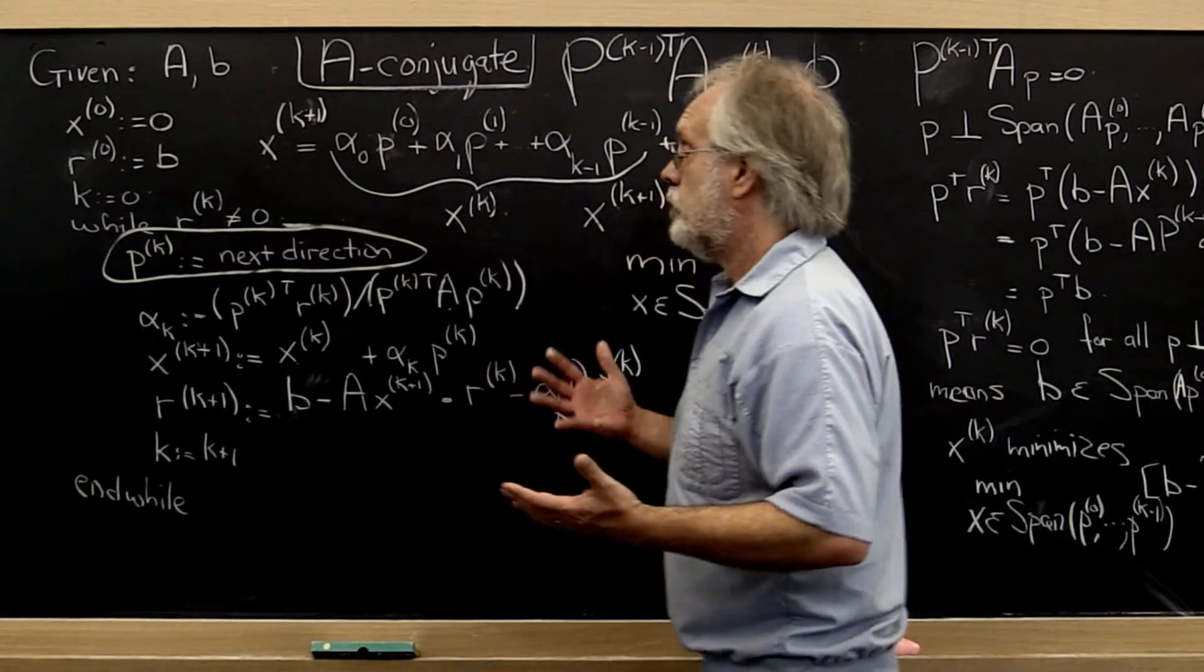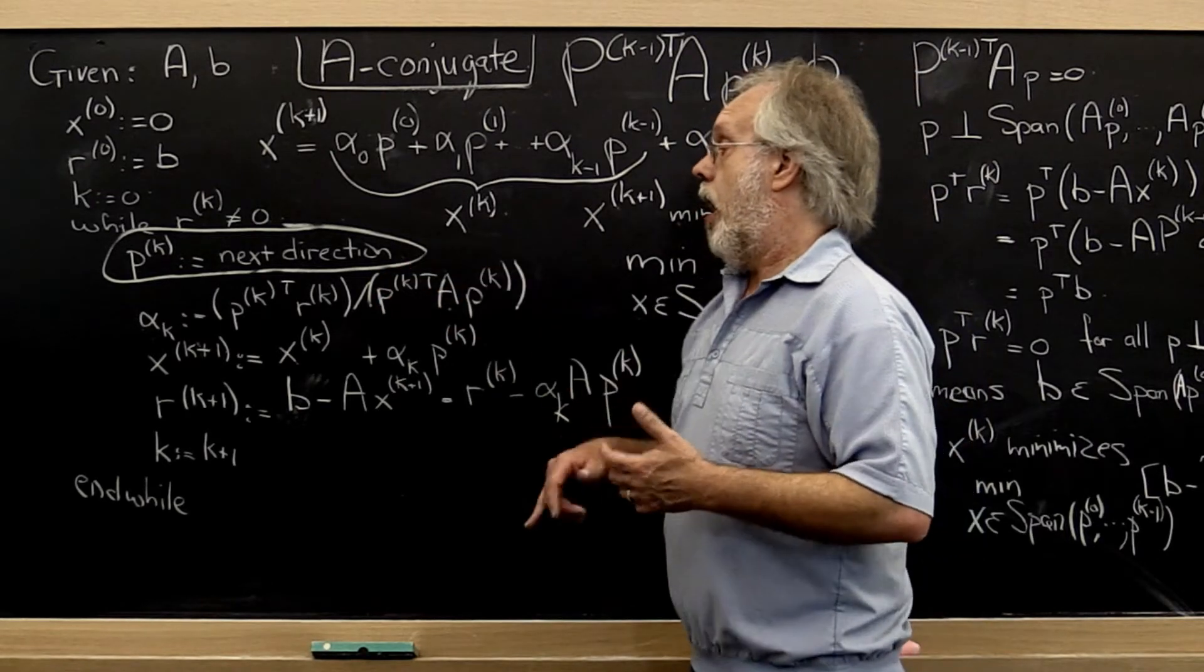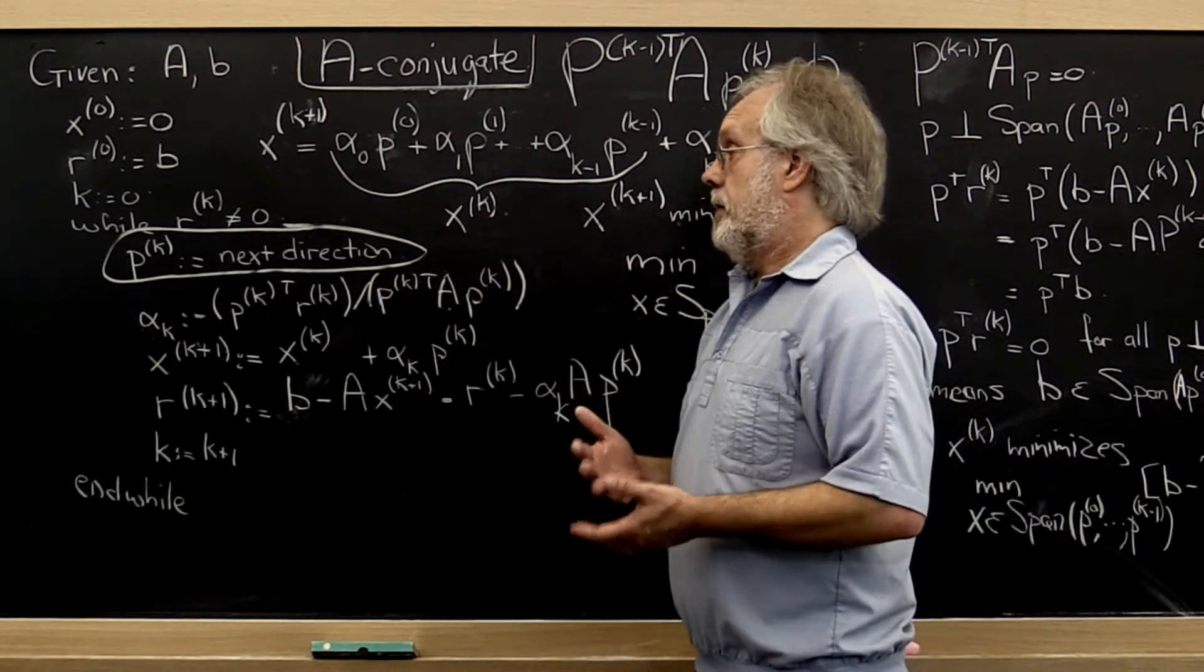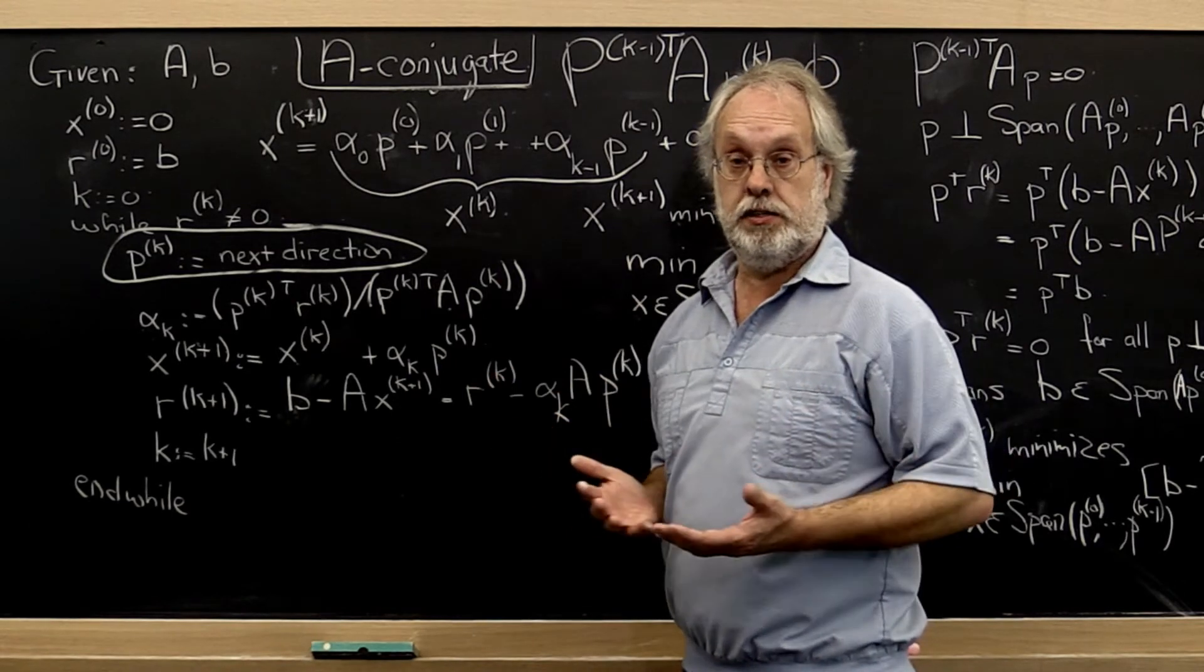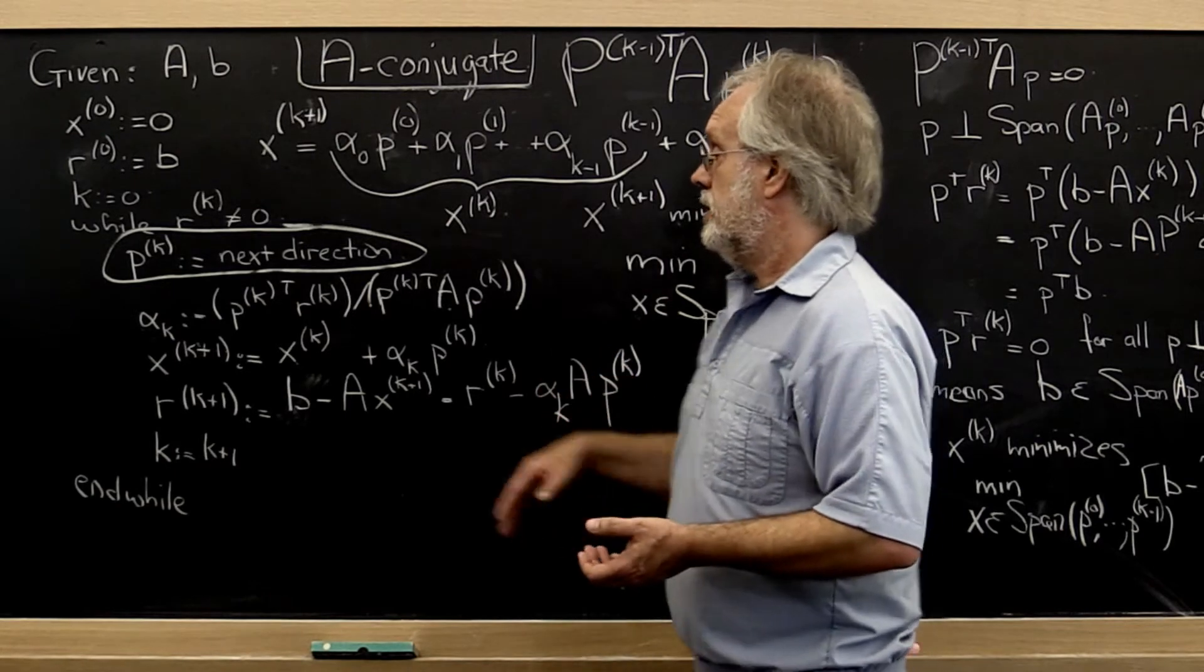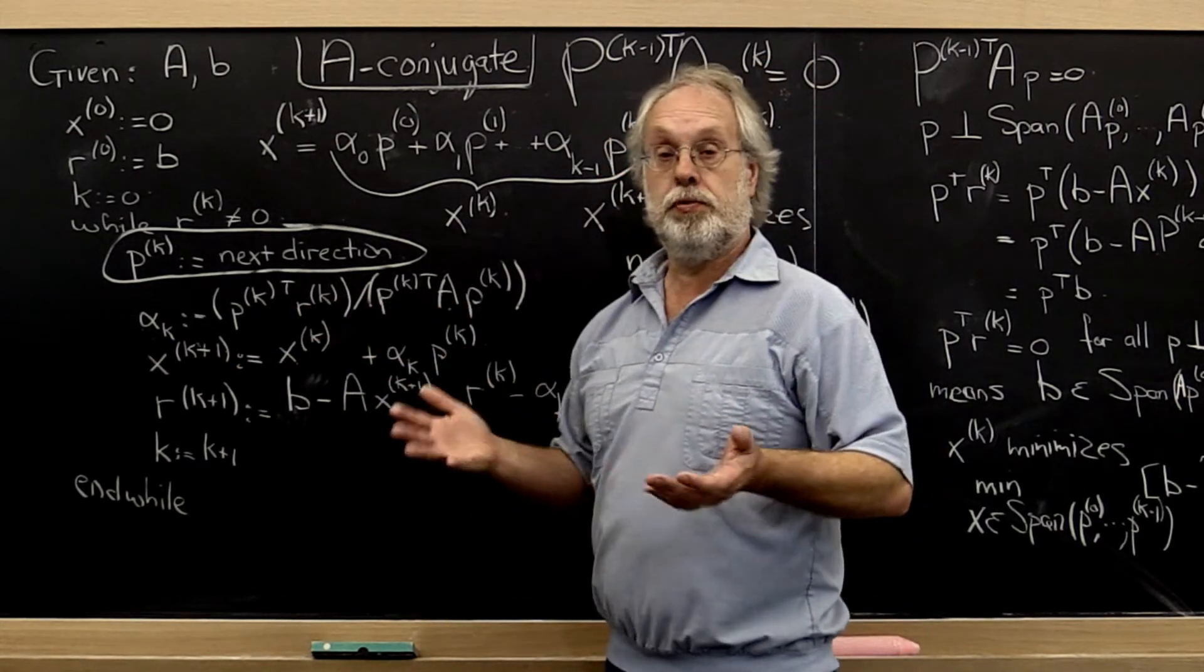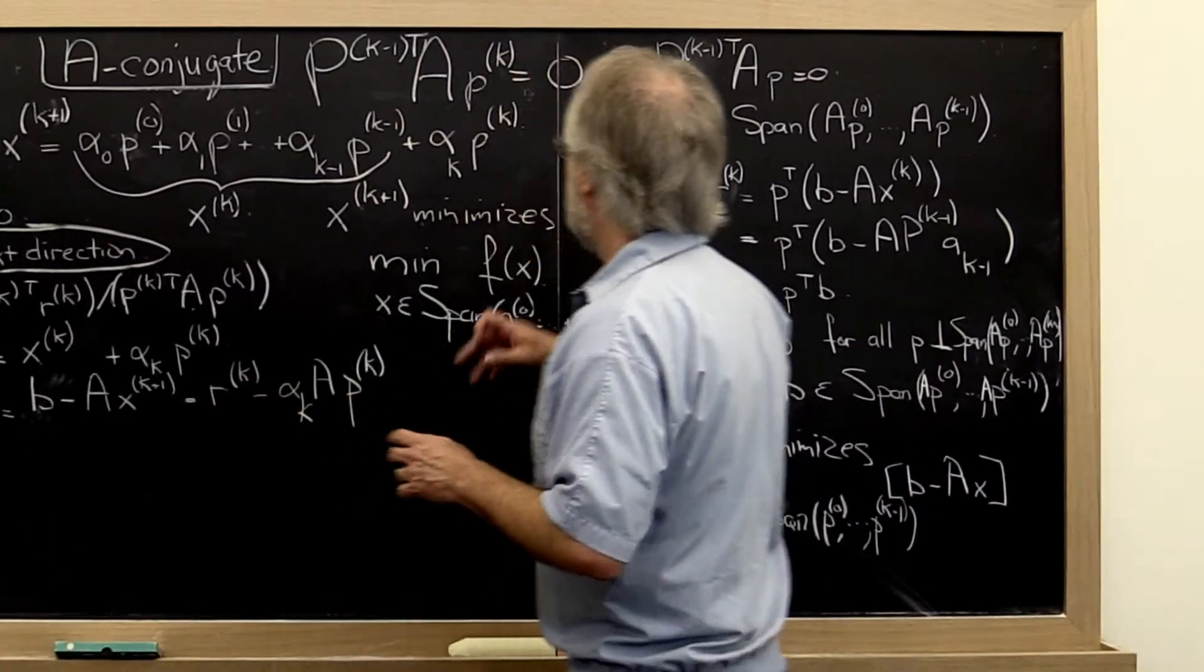So the question really is, there are two questions. One is, are there a conjugate directions to be had? Do they even exist? And the second one is, if they exist, is there one that is not perpendicular to the current residual? Let's have a look at the first question.